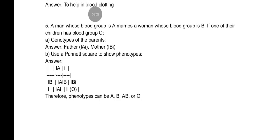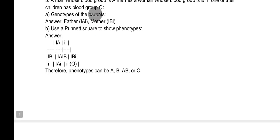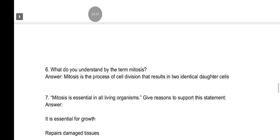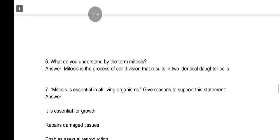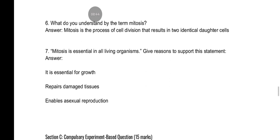For genetics: a man whose blood group is A married a woman whose blood group is B. If one of their children has blood group O, you need to determine the genotypes of the parents. The answer is that the father is I^A i and the mother is I^B i. Use a Punnett square to show the phenotypes. What do you understand by the term mitosis? Mitosis is the process of cell division that results in two identical daughter cells.